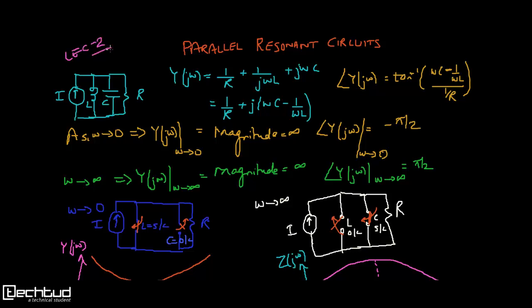In the last lecture we discussed series resonant circuits where RLC are in series connection, modelled by connecting a voltage source. Now in parallel resonant circuits we will model by connecting a current source with RLC in parallel. It is better to go with admittance notation for these circuits because for parallel connections it will simply be additions.